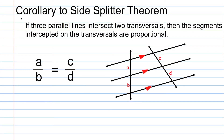Corollary to the side splitter theorem: if three parallel lines intersect two transversals, then the segments intercepted on the transversals are proportional. Here we have three parallel lines intersected by two transversals. We can conclude that A over B is equal to C over D — the segments on the left form a ratio equal to the lengths of the segments on the right.